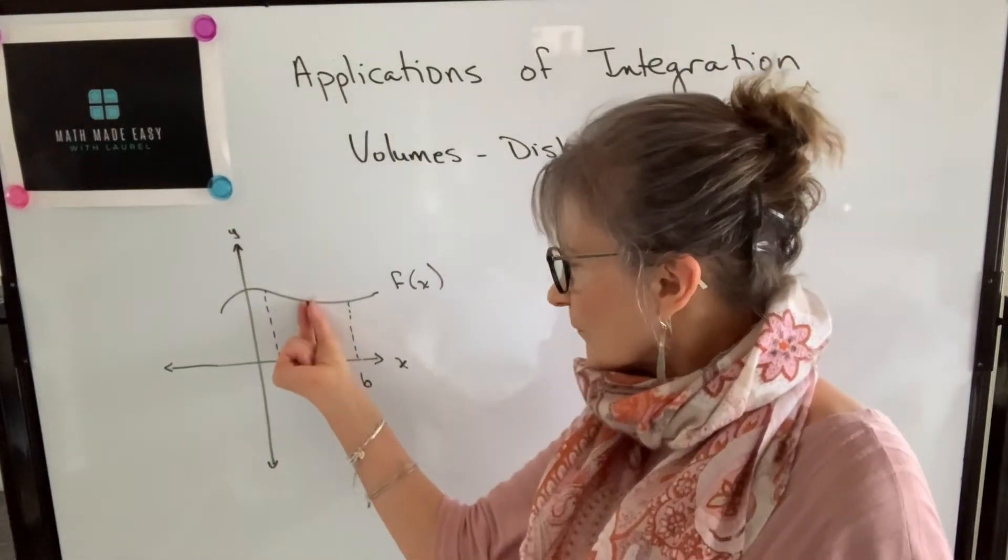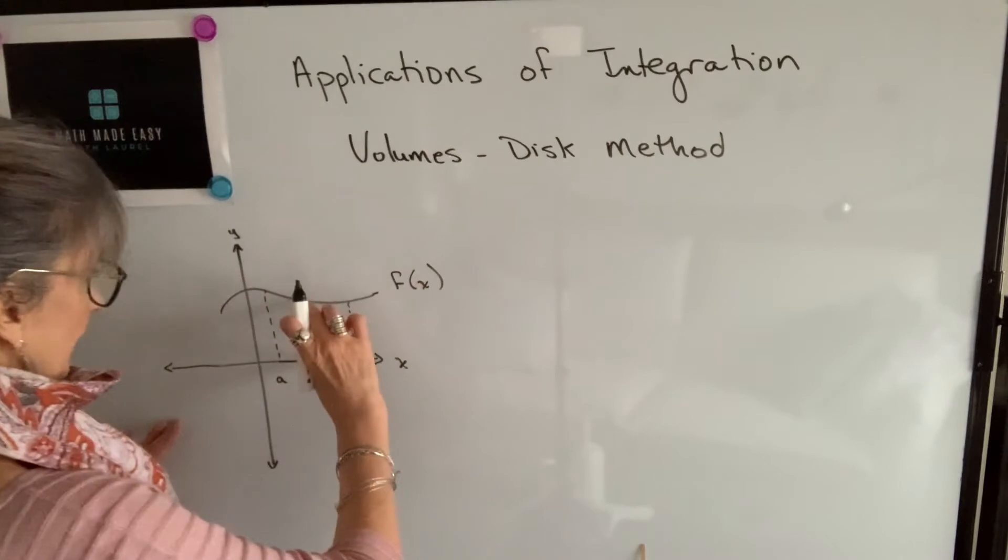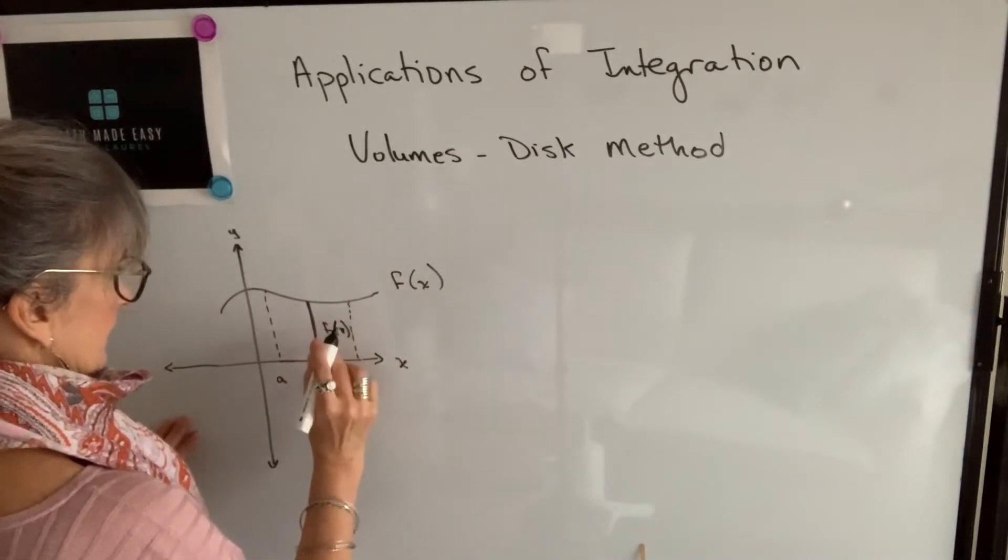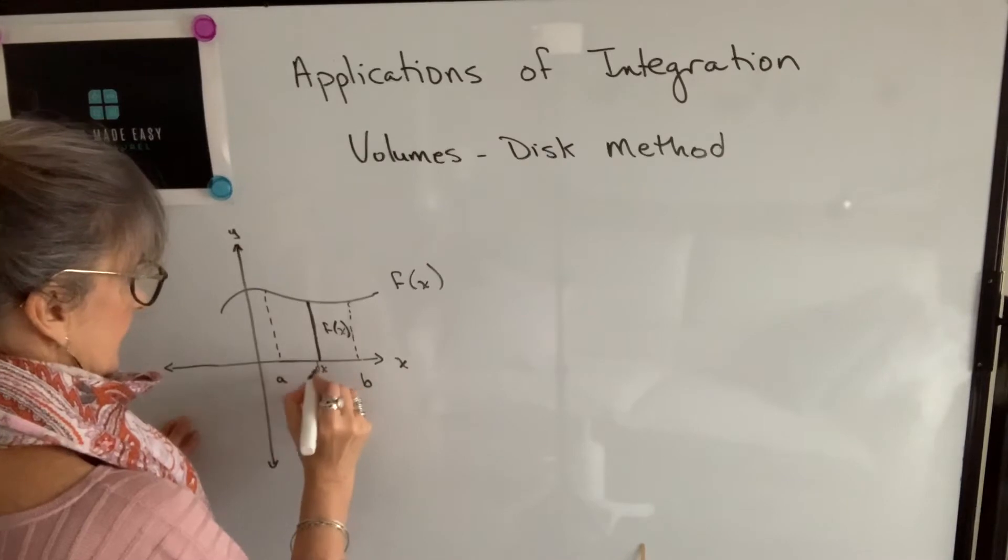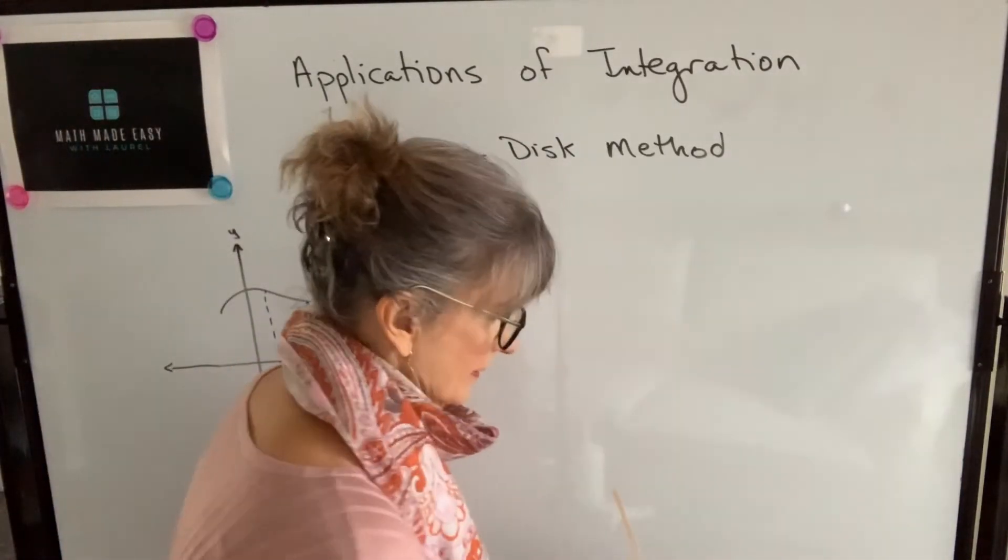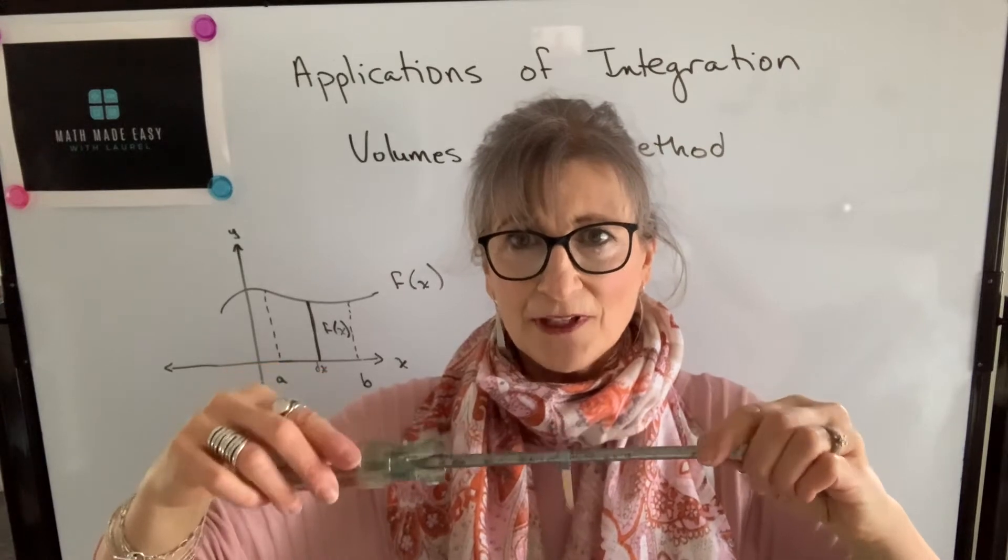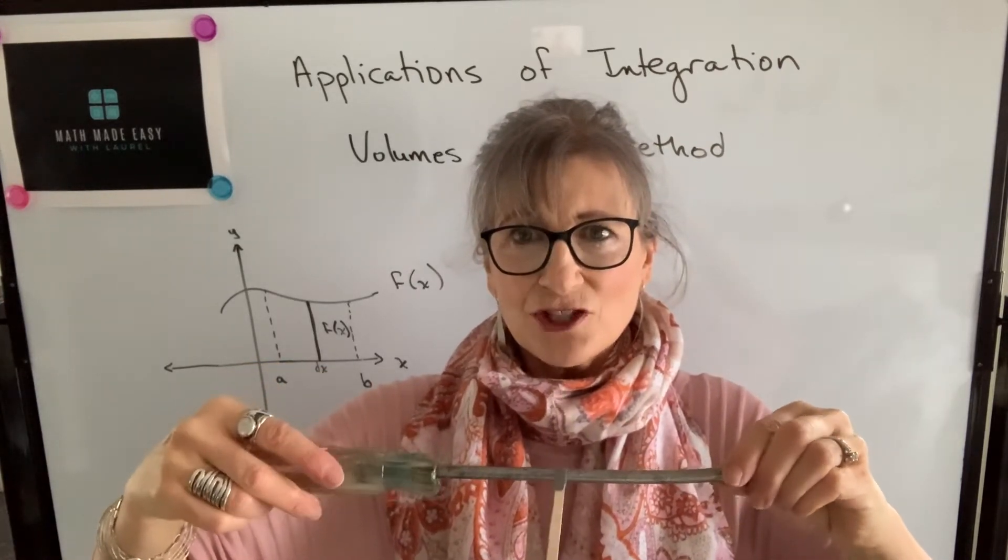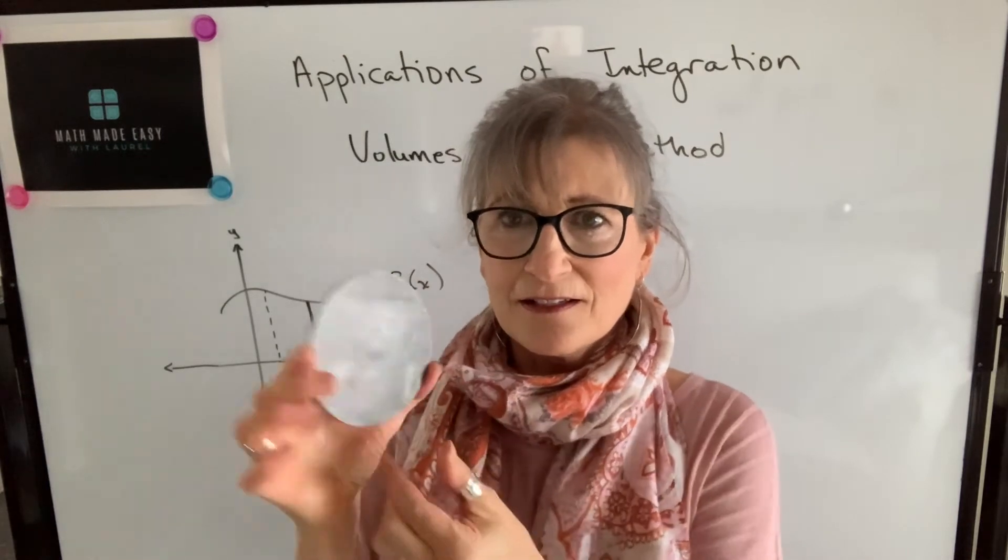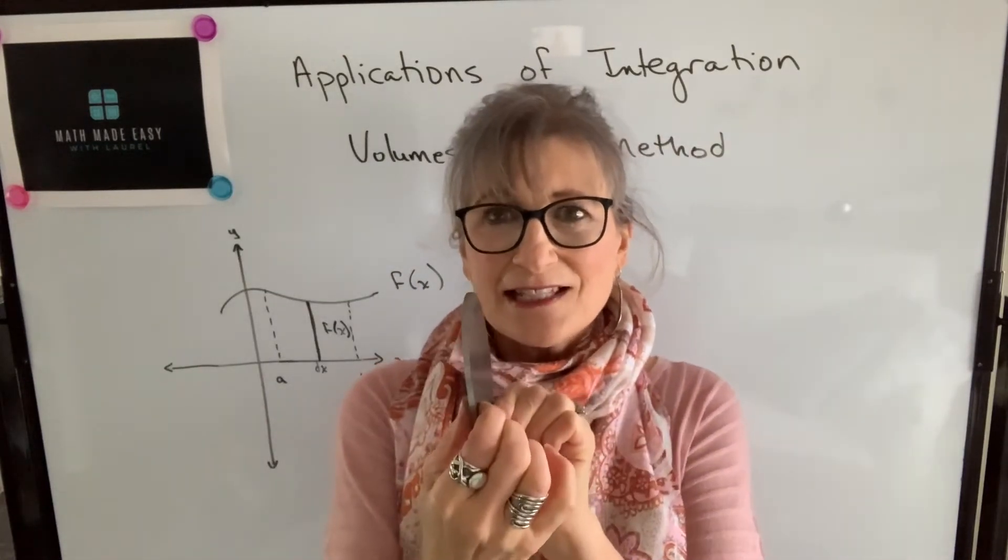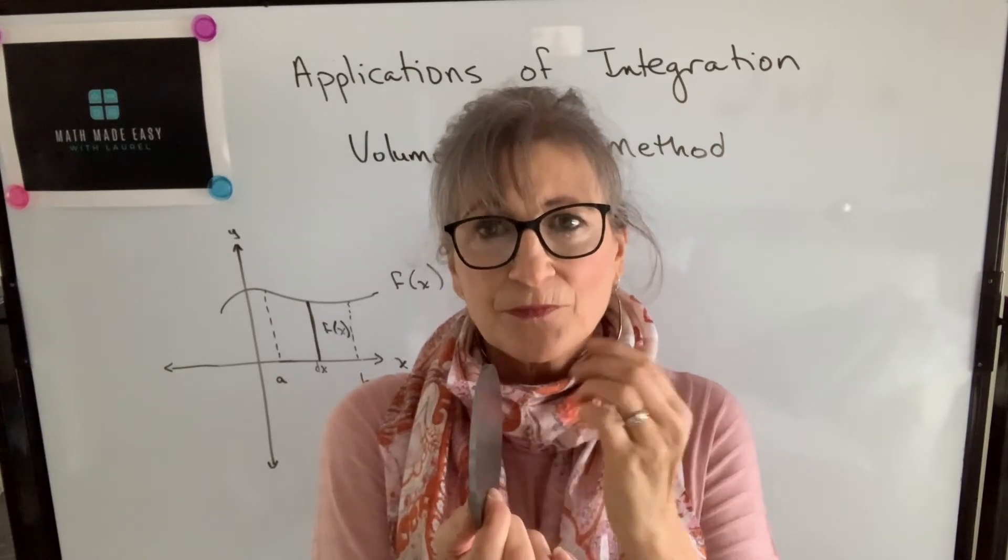Now, if we take a look at that representative rectangle that we talked about when we were talking about areas, that rectangle will have a height of f of x and a width of dx. And if we were to take that representative rectangle and rotate it around the x-axis, hopefully you can see that the shape formed by that rotation will be a disc. So it's a disc, and this is a flat cylinder,